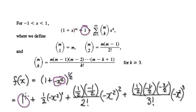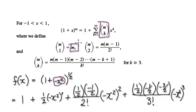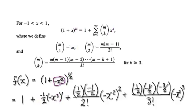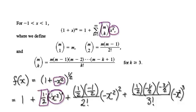The first term will be one. The next term is when k equals one, so the coefficient will simply be m — remember, m is the power here. Then it will be x to the power of one. So when k equals one, this will be our coefficient, and then this will be our x term.